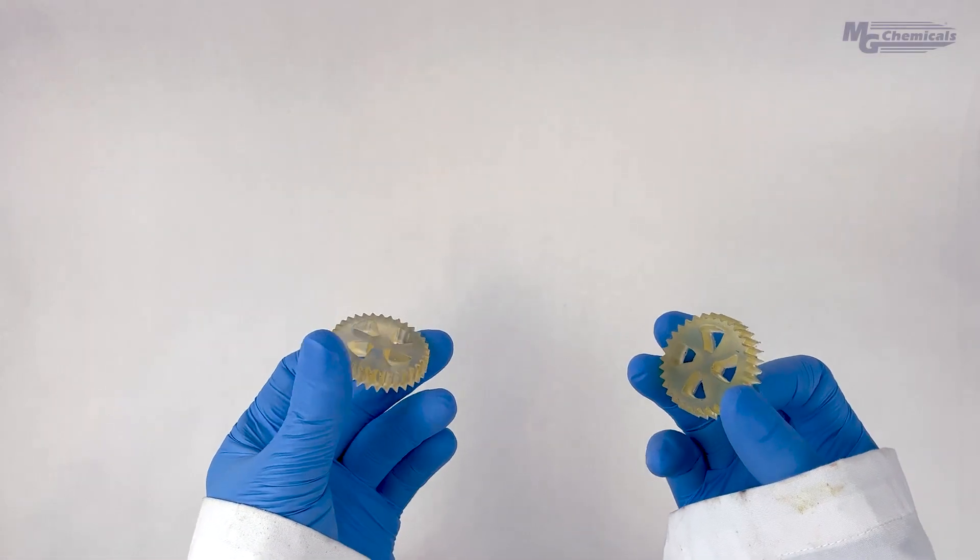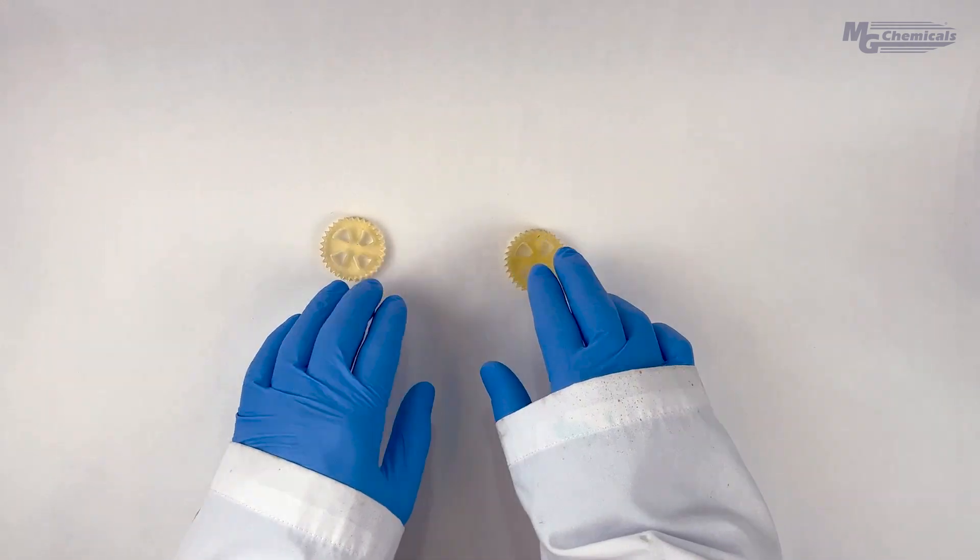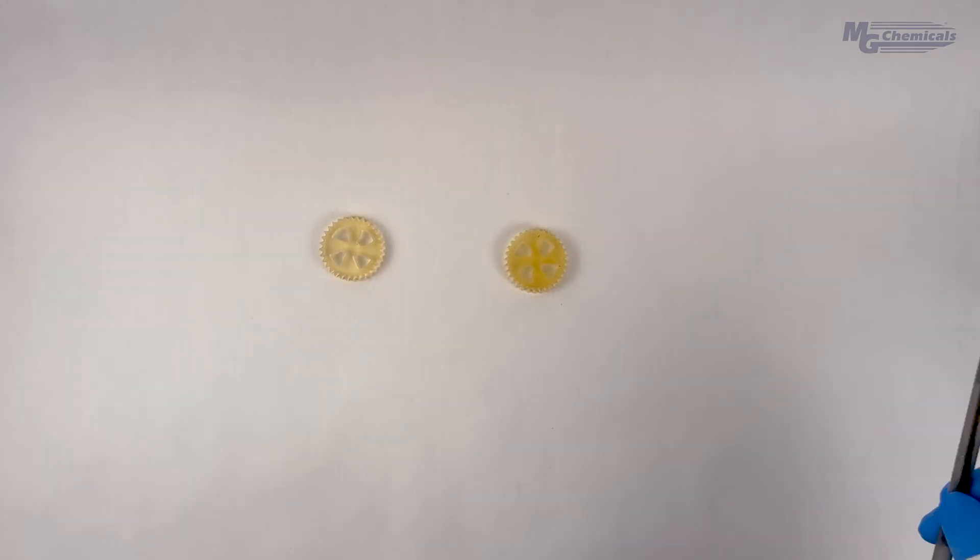Here are two small cam parts we made using a 3D printer that we're also going to be electroplating along with the pen barrel.